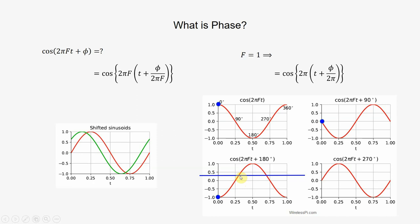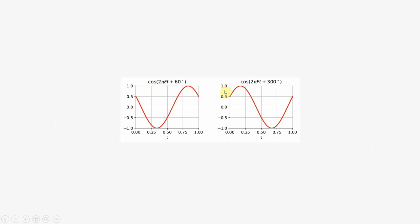For example, here we have a signal cos 2πft plus 60 degrees and cos 2πft plus 300 degrees. I hope that you can draw the signal from the understanding we have acquired so far. Here we can look at 0.5 and say that this is cos 2πft plus 60 degrees because cos 60 degrees is 0.5.